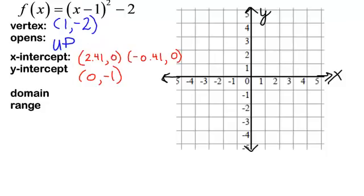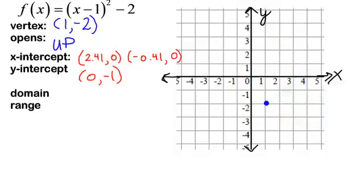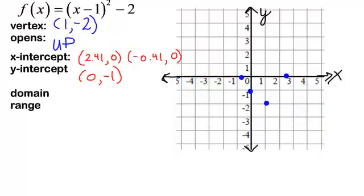So we are ready to graph it. Our vertex is 1, negative 2. I know it opens up. Our x-intercepts are about 2.5 and about negative 0.4, so 2.4 is a little bit past the 2, and negative 0.4 is about right there. I know the y-intercept is at 0, negative 1. Just for fun, if I wanted to plug in 2, I'm guessing my point would be right down here at negative 1 also.